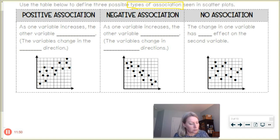All right, there's three types, one of which is called positive association. As one variable increases, the other variable increases, kind of like what we just saw with the shopping, buying the items and spending. The variables change in the same direction, like as the price goes up or as the number of items we buy goes up the price goes up.